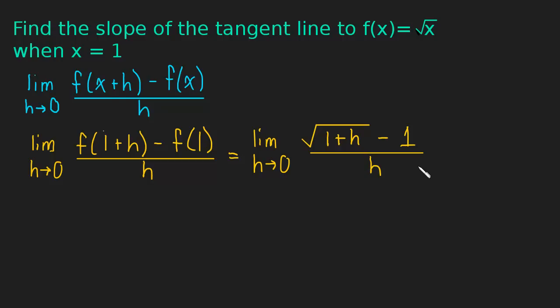And now this is a limit that we learned how to solve when we were learning how to solve limits. So what are we going to do? We're going to multiply by the conjugate. So if you don't remember how to do this, I'll put a link to the video in which we learned this. So we're going to multiply by the square root of 1 plus h plus 1. And of course we have to multiply using a fraction because we can only multiply by 1, otherwise we're going to change the limit.